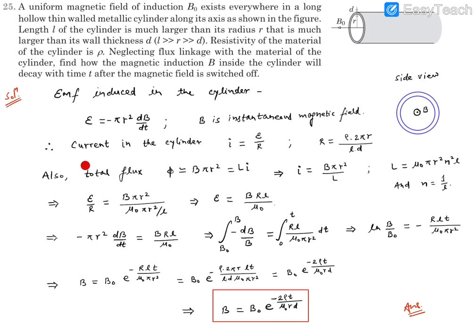B is the instantaneous magnetic field, and we need to find B as a function of time. Since current in the cylinder can be written as I = EMF/R, the resistance of this cylinder is ρL/A.